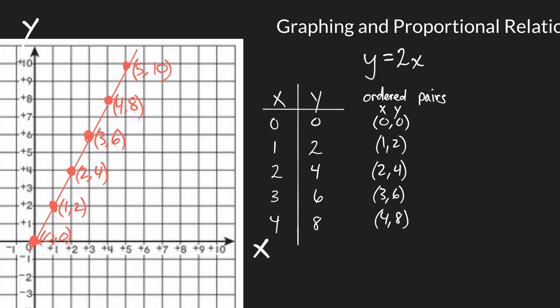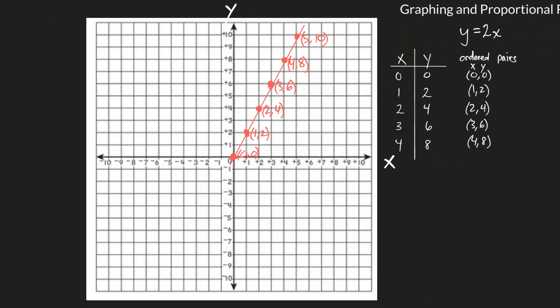These are for proportional relationships. I want to say that proportional relationships only exist in the first quadrant. Going back to sixth grade — the quadrants are numbered in Roman numerals: the first quadrant is upper right, the second quadrant is upper left, the third quadrant is bottom left, and the fourth quadrant is bottom right.